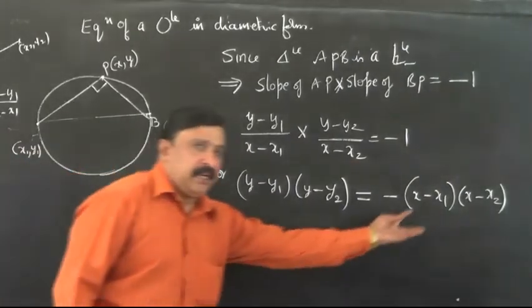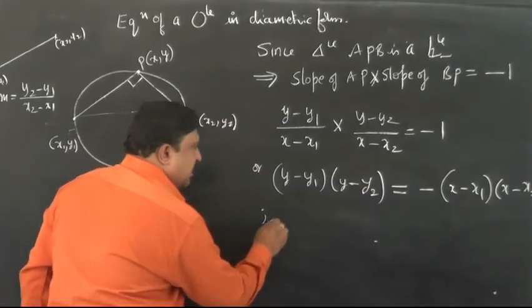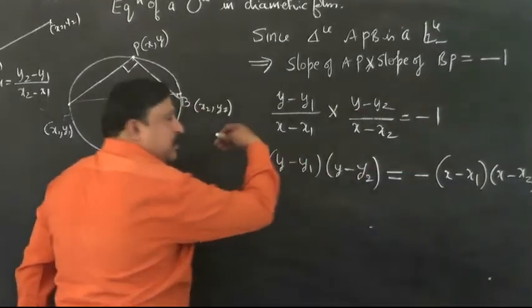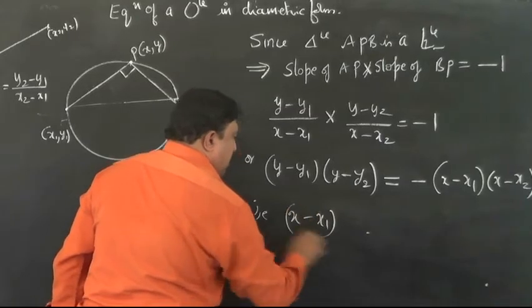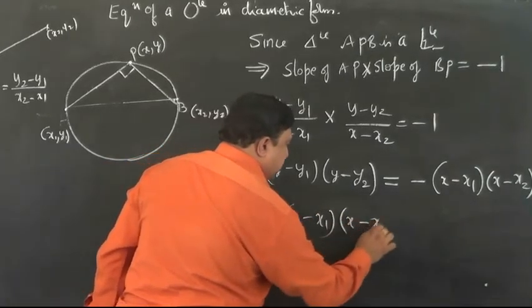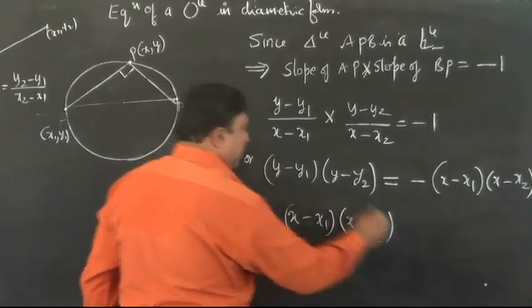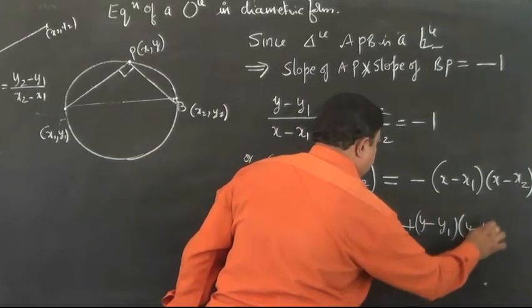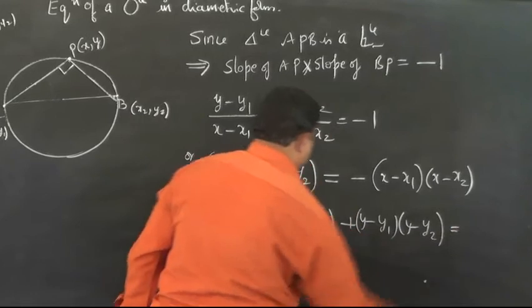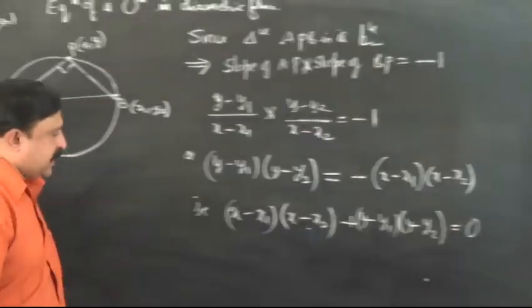Bring all the terms from right hand side to left hand side. Now it is becoming positive as it comes to the left hand side. X minus X1 into X minus X2 plus Y minus Y1 into Y minus Y2 is equal to 0.